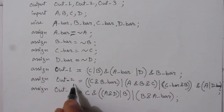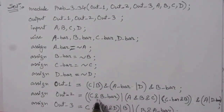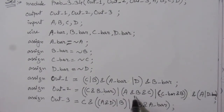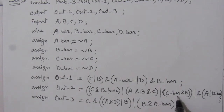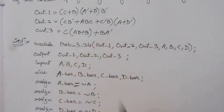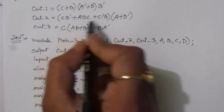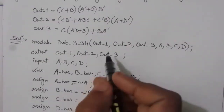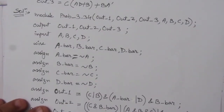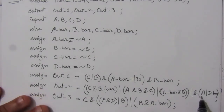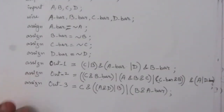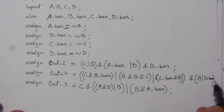For out_2, we write: assign out_2 = C & B_bar. Because it is multiplication. Then we have A AND B AND C, so we write A & B & C. Then we have C_bar AND B, so C_bar & B. Between these terms we have OR operations. And then AND operation with another bracket containing A | D_bar. So the expression uses OR and AND accordingly.